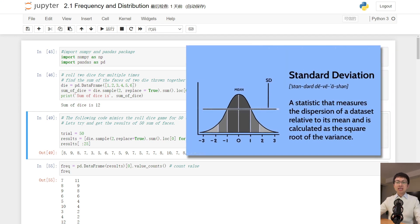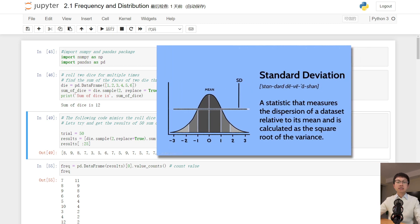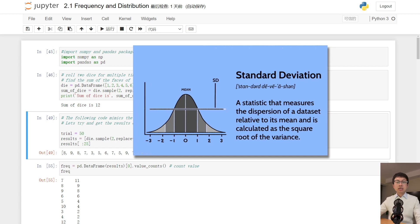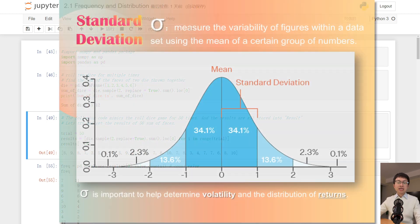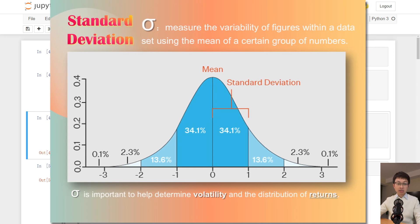Put simply, standard deviation measures how far apart numbers are in a data set. Standard deviation is a basic mathematical concept that has an important place in various parts of the financial sector, from accounting to economics to investing.